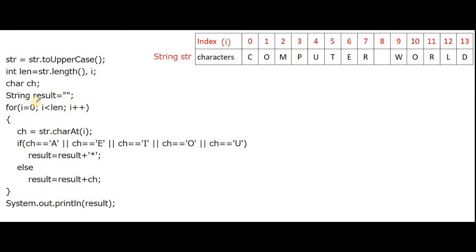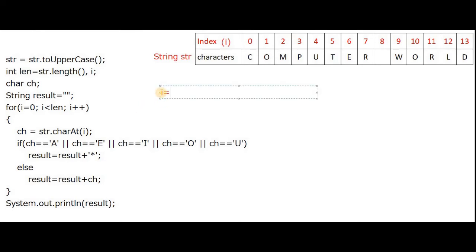Now we are starting the loop. The loop will run from zero to less than length. If the length is 14, the loop runs from zero to 13. Assume the value of 'i' is now zero — the loop is starting with zero.